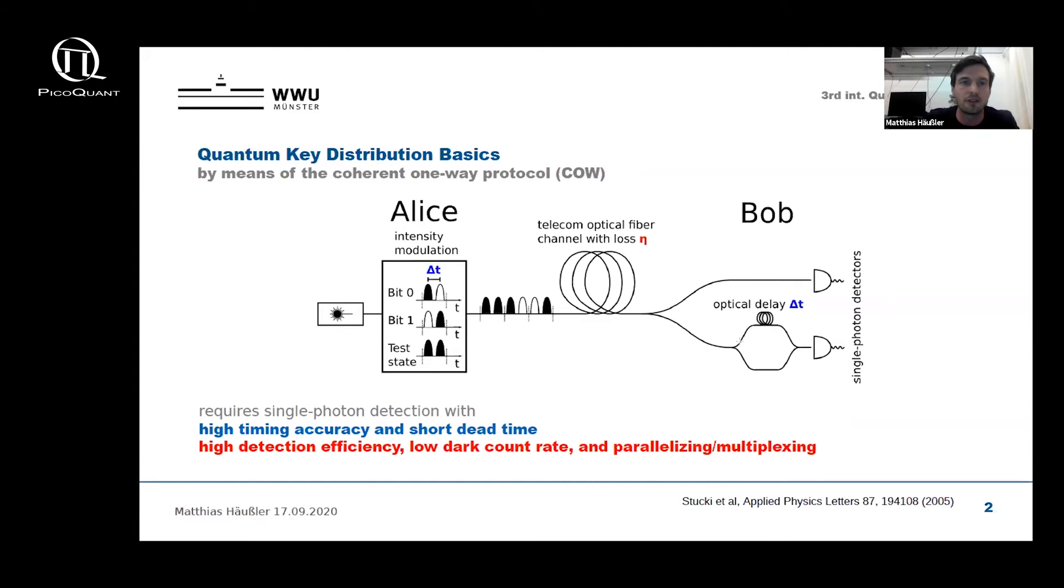Bob can analyze the phase relation of two subsequent photons in a test state, and according to the laws of quantum mechanics, this phase relation can be used by Bob to gather information on potential eavesdropping. If Bob measures deviation from the expected phase relation to a certain threshold, it is likely that there has been an eavesdropper, and Alice and Bob can decide not to use the generated key to exchange their valuable information, and then also the eavesdropper has no access to it.